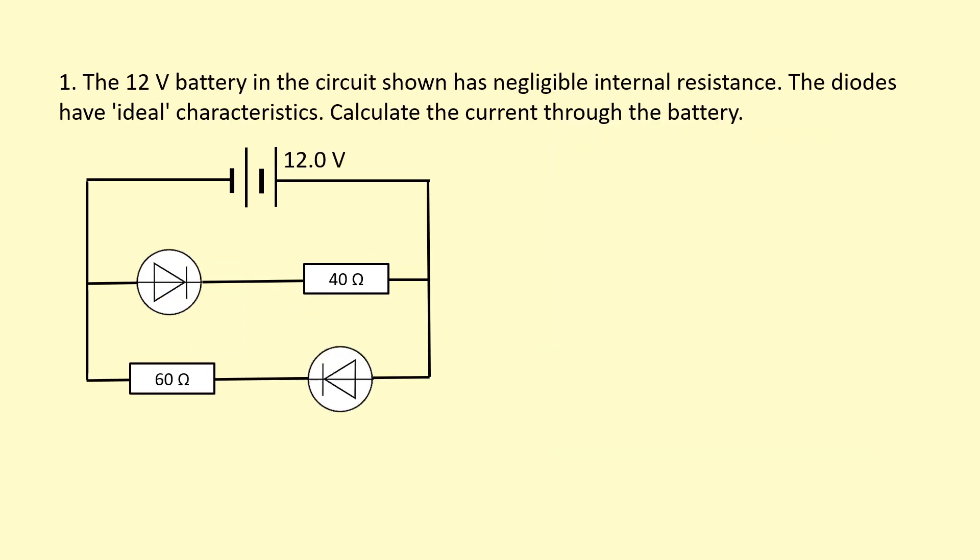The 12-volt battery in this circuit shown has negligible internal resistance. The diodes have ideal characteristics. Calculate the current through the battery. So what do they mean by ideal characteristics? Basically that's just saying that the diodes have very low resistance so that we can ignore the resistance of the diodes.